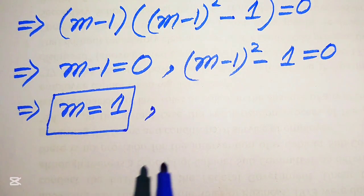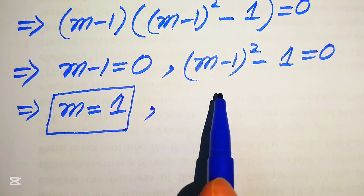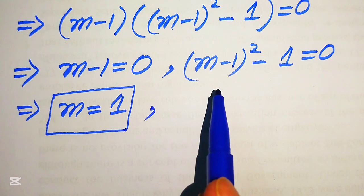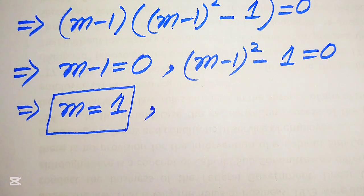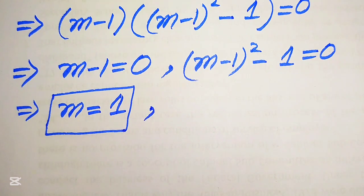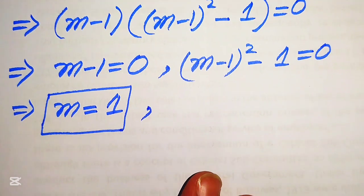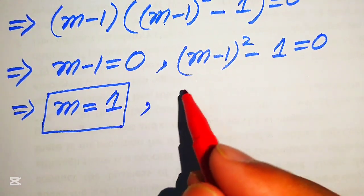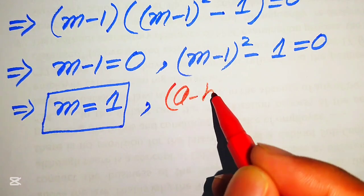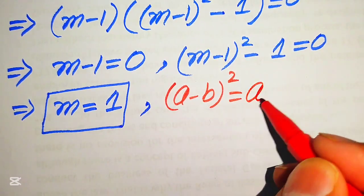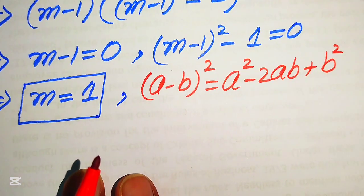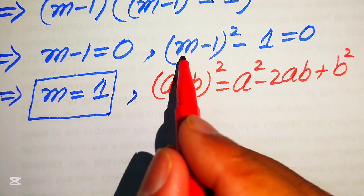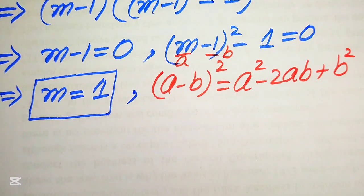To find the other roots we solve the quadratic equation (m - 1)² - 1 = 0, which is not yet in standard form. We convert it using the formula (a - b)² = a² - 2ab + b², where a = m and b = 1.